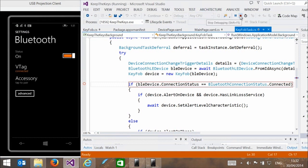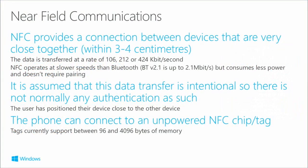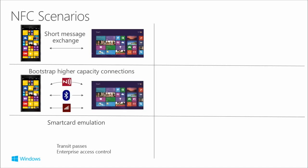I hope that shows the power of what we've got there with Bluetooth LE and background tasks to build this kind of solution. Now I'm just going to talk a little bit again about near-field communications, NFC. This is for very, very close connections - you tap the device to an NFC chip or to another phone and you can exchange information. It's assumed that this data transfer is intentional, so there's not normally any authentication because it's physical tapping together. You can go to unpowered things, there are lots of scenarios we support. You can send short messages between devices, and you can use NFC to bootstrap higher-capacity connections - so you tap initially and then it sets up a Wi-Fi or Bluetooth connection for doing faster comms.